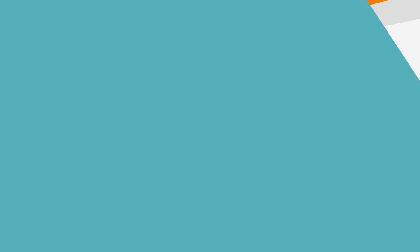Let's use this in a problem. A governing committee is chosen out of 10 people. If there are 3 people on the committee, how many distinct committees could be formed? A is 100, B is 120, C is 300, D is 420, and E is 720. Let's underline the facts, circle the keywords, and label the answer choices.